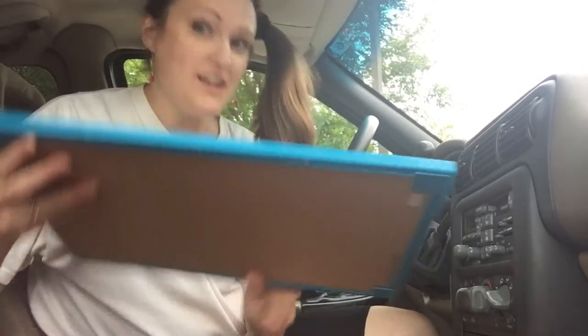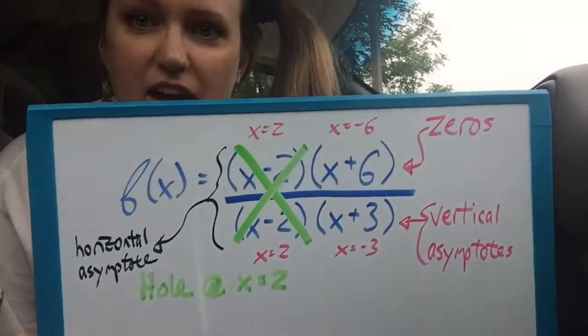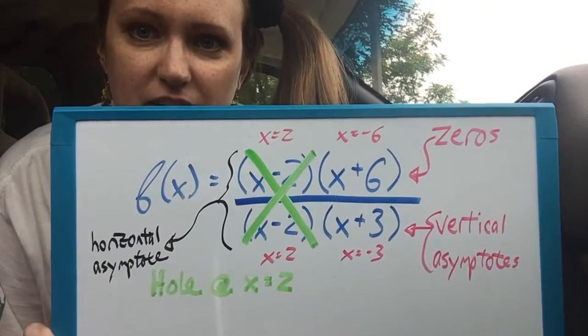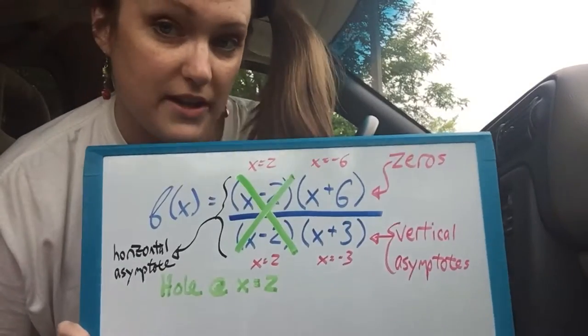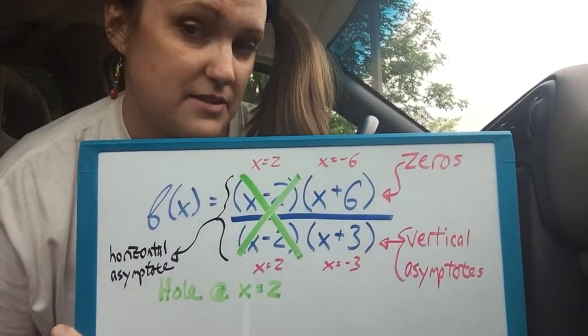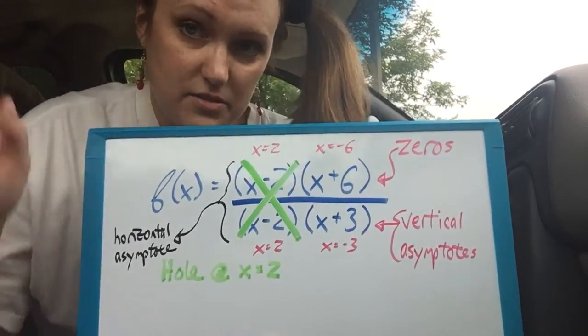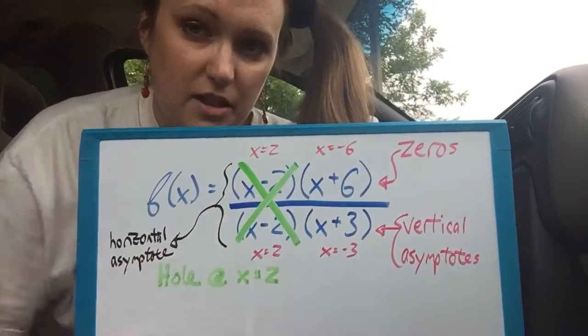Okay, so now I crossed out the two factors that are identical. That defines my hole. And so there is now a hole at x equals 2, not a zero, not an asymptote, just a hole. Line, hole, continue the line.